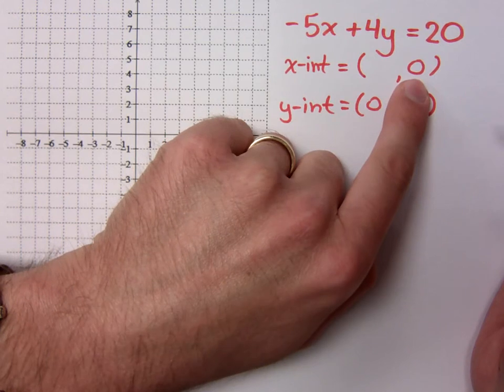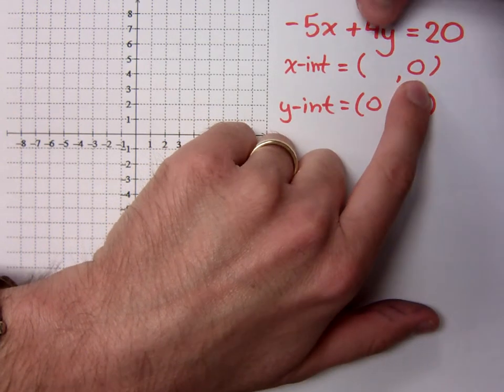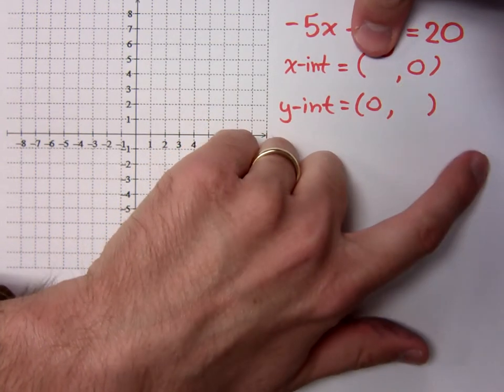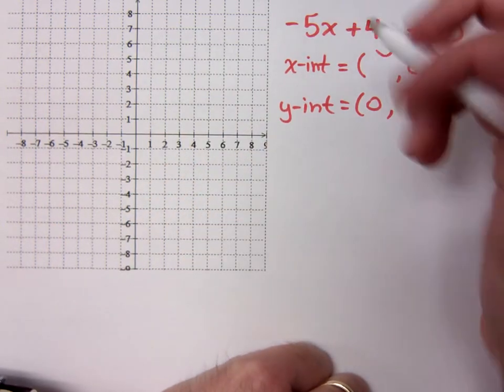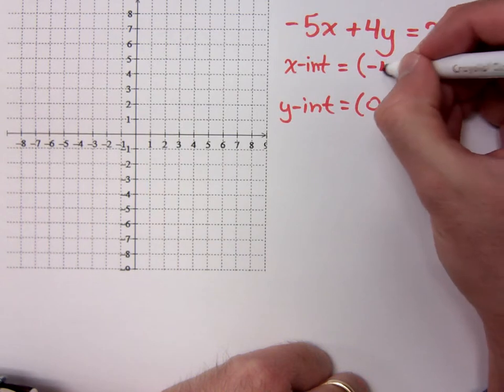Now, easy. For the x-intercept, you say that y is 0. So I'm going to cover that up. That means x equals what? Negative 4. We can look at that, and hopefully we can just take care of that in our heads. That's negative 4.